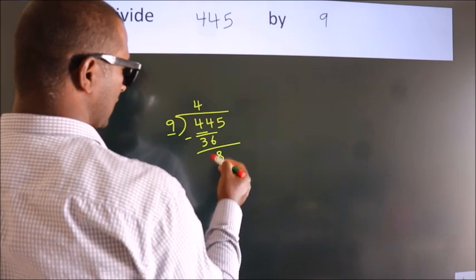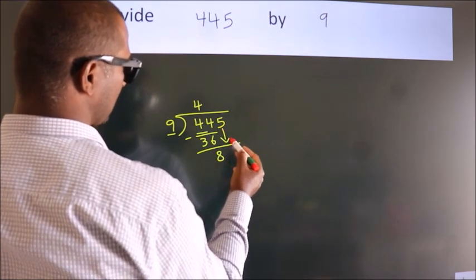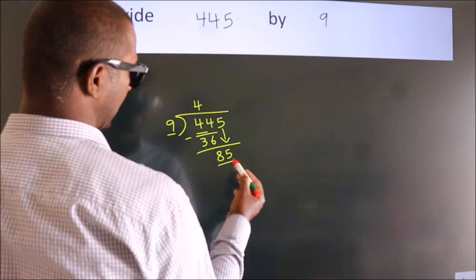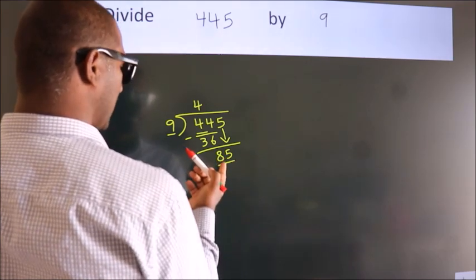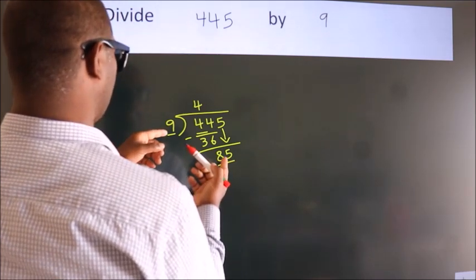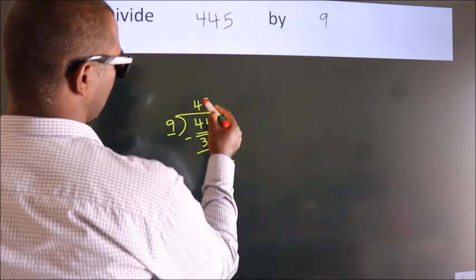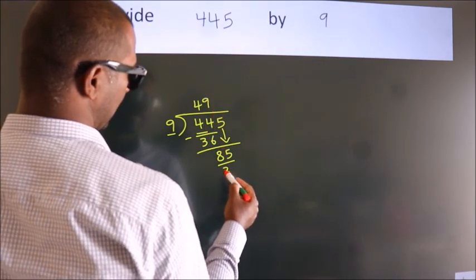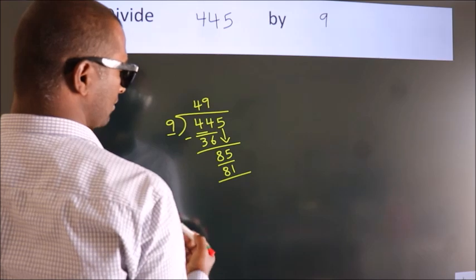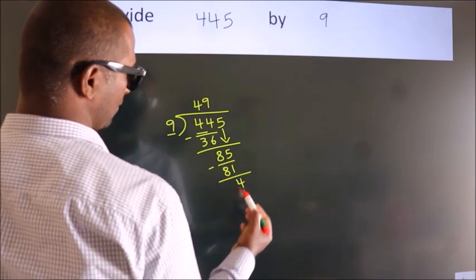After this, bring down the beside number. So 5 comes down, giving us 85. A number close to 85 in the 9 times table is 9 nines — 81. Now we subtract and we get 4.